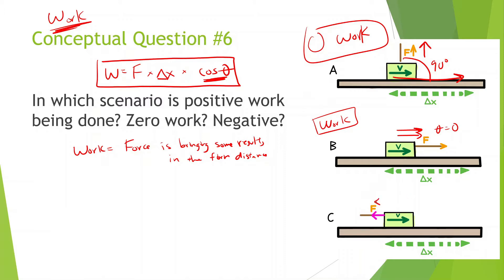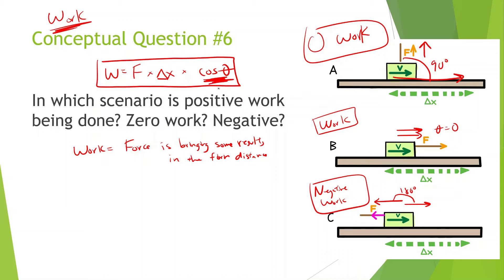In this next case, the force is going to the left while the displacement is going to the right, which is going to be 180 degrees — so this is doing negative work. It's going the negative direction of which way the force is trying to make it go. Cosine of 180 is equal to negative one.